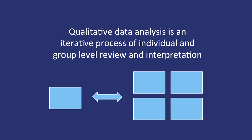I want to spend a moment with this figure, which conveys the most essential defining feature of qualitative data analysis. It's an iterative process of individual and group level review and interpretation of narrative data. We move back and forth between the individual analyst's reading and interpretation of the narrative data, and the multidisciplinary research team's interpretation. Moving back and forth between these levels is really critical to generating rich interpretive analysis.